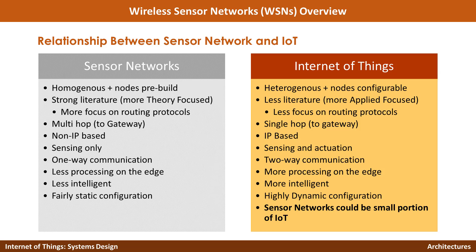In sensor networks the focus is on sensing only, while in IoT the focus is on both sensing and actuation. Sensor networks focus on one-way communication — their job is to send data to the controller. In Internet of Things, you get the data and then send commands back. In sensor networks, there is less focus on edge processing because sensor nodes merely collect and pass on data, with perhaps some aggregation. In IoT, there is an increased focus on edge processing, including more complex analytics.